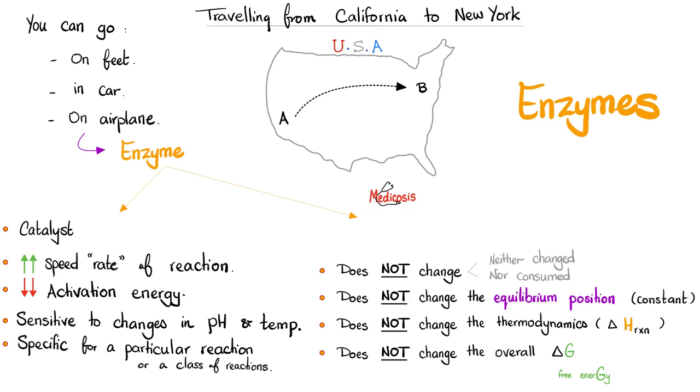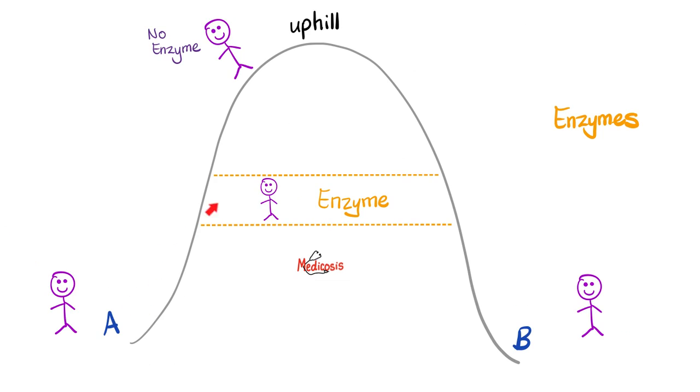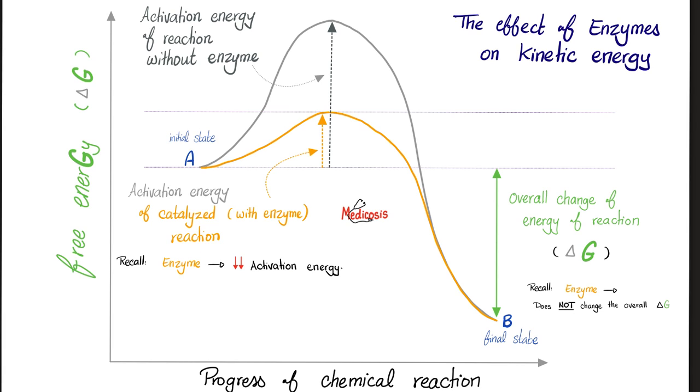They do not change. We do not throw them in the trash once you reach your destination. They do not change the equilibrium position. They do not change the thermodynamics or the overall free energy. The enzyme is a shortcut. It lowers the activation energy and therefore boosts the speed of the reaction, but the destination is still the destination. Enzymes are catalysts. They lower the activation energy without changing the overall energy of the reaction.